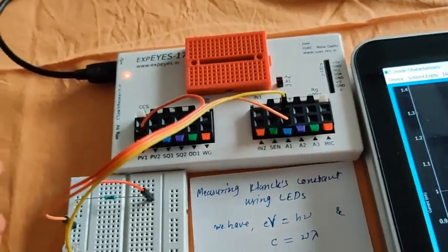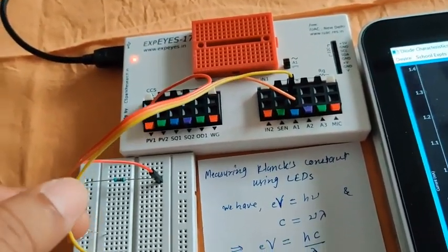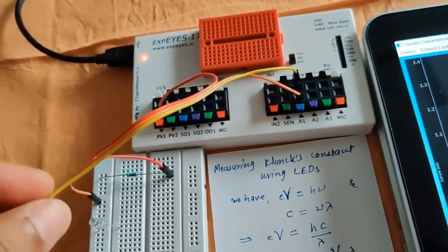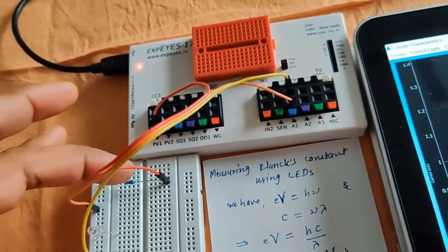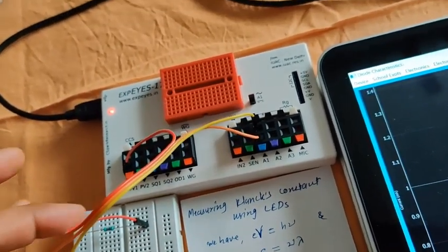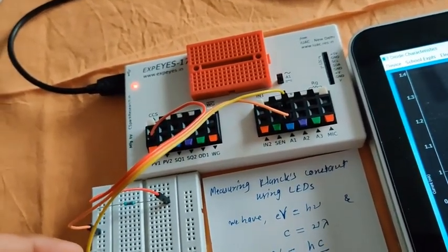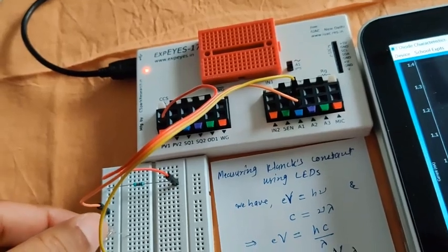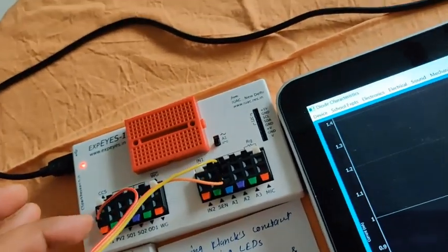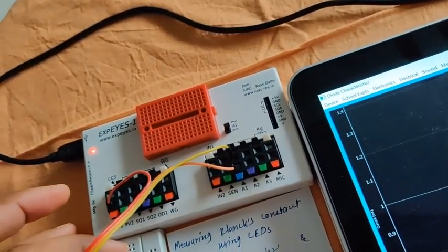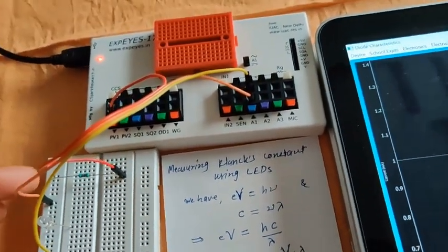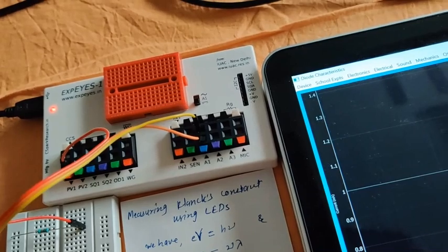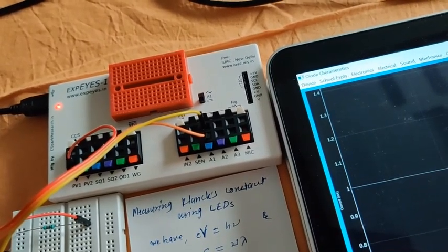The connections are made as per the earlier experiment which we have performed on diode characteristics. One kilohm resistance is connected in series with the diode—in this case, the LED—and PV1 is connected to one end of the resistance.